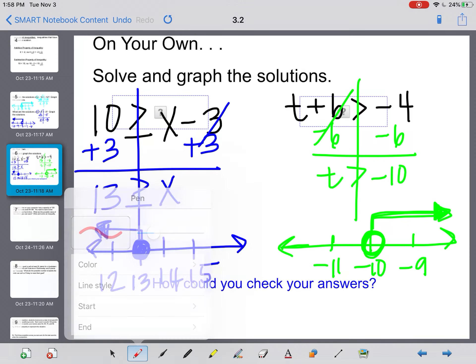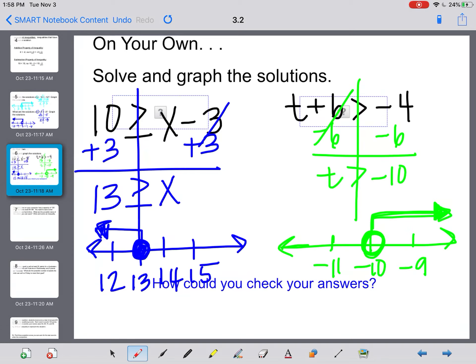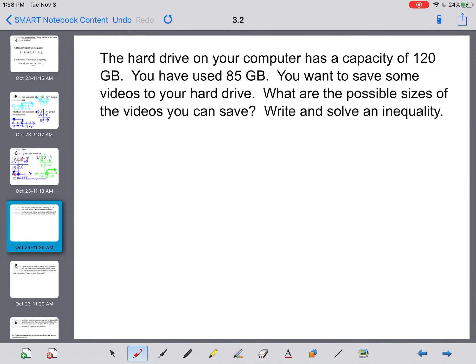Okay, hopefully your answers, both your solved answers and your graphs match mine. How could you check your answers? I would highly suggest that you take one of the numbers that you colored in and plug it in and make sure that it works. So I know that 12 is shaded in here, so I'm going to put a 12. If I did 12 minus 3, that would give me 9, and yes, 9 is less than or equal to 10. So I know that that one's right.